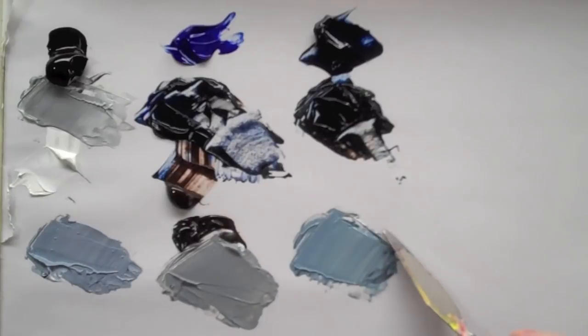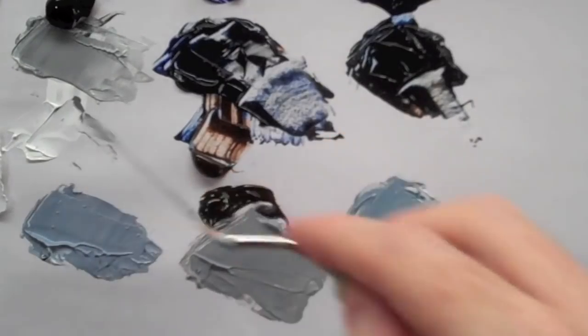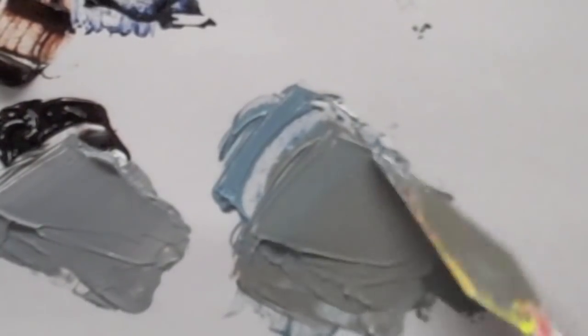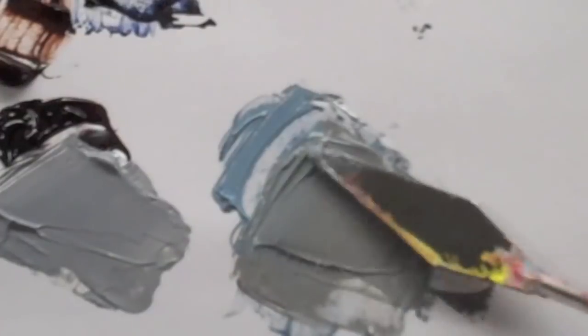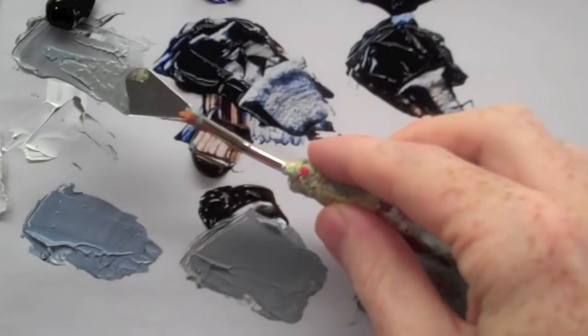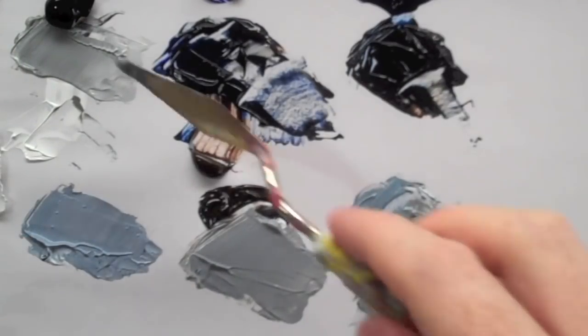Again, you can try to neutralize it when you are mixing by just putting a bit more of the burnt umber into it. You can see how that is definitely closer to this color here. It is a bit greenier though than this one.